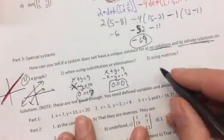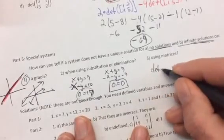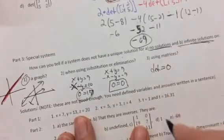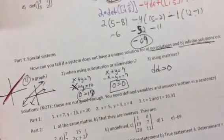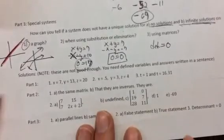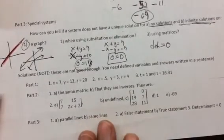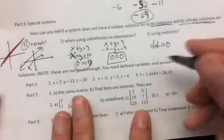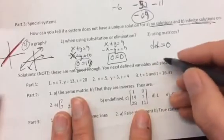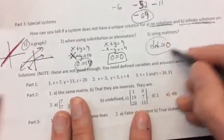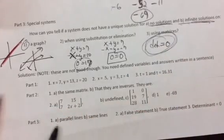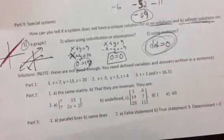And using matrices, if the determinant equals zero, it doesn't actually tell you which one of these it is, whether it's no solutions or infinitely many solutions, but it's one of those two if the determinant is zero. So when you try to find the inverse matrix, if you try to do it in a calculator and you try to find the inverse matrix, it says you can't find the inverse matrix because part of finding the inverse matrix involves dividing by the determinant and you can't divide by zero. So I hope this helps on your homework.